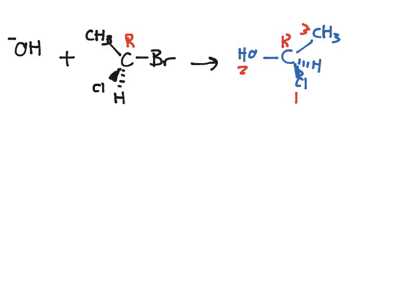This one still retains the R configuration. The molecule still is R. So that was what I was talking about before when I stated that the inversion of configuration will always occur, but the R and S may not change. Now let's do an example of when the R and S changes, the R and S nomenclature, I mean.